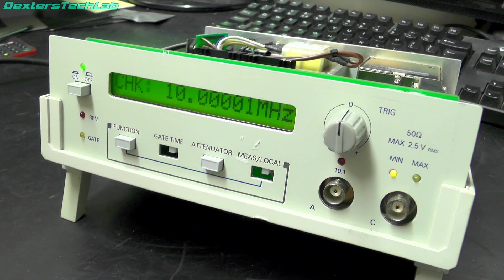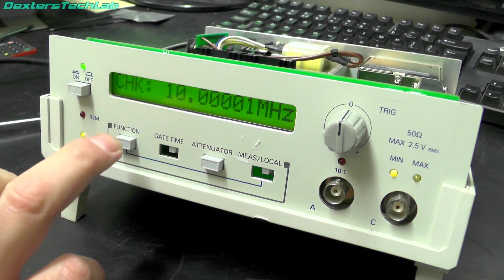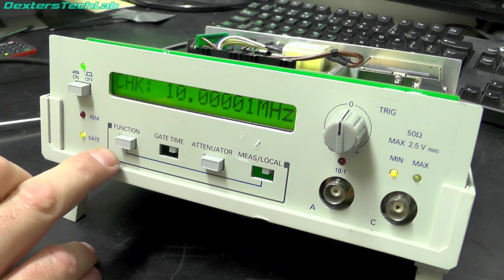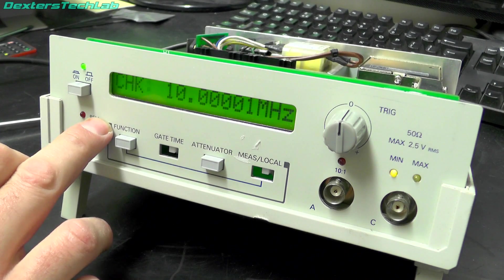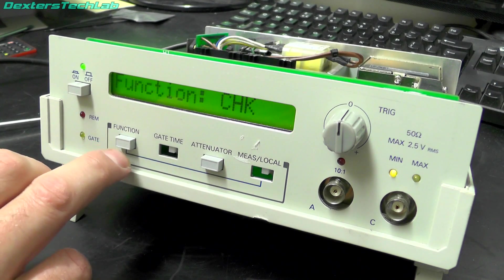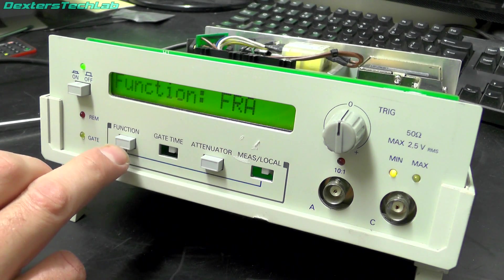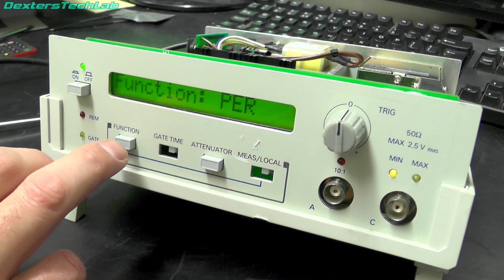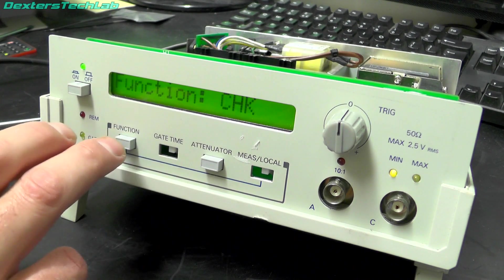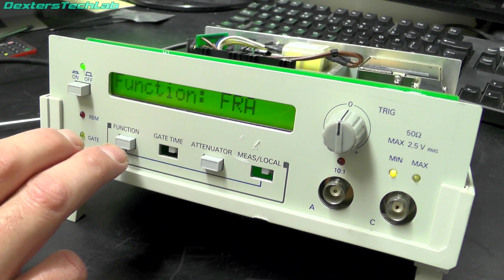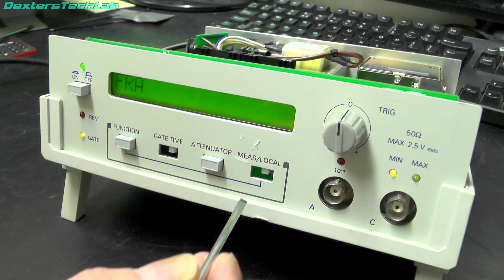So I've had a look at some of the documentation. I think most of the functions are accessed with the function key. Obviously I think check is internal check frequency. Function FRA is frequency channel A. Channel C period. Total count and we're back to check. So I think if we do channel A we'll need to push that in.